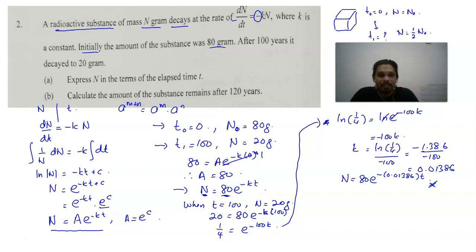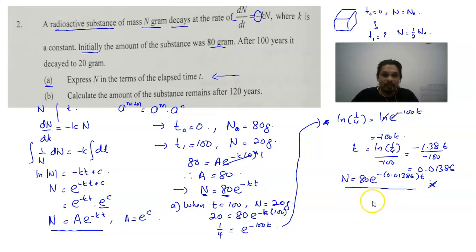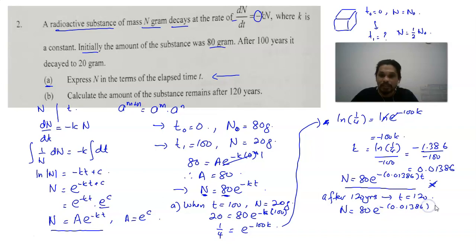We now complete the equation: N equals 80 e to the power of negative 0.01386t. To express N in terms of elapsed time t — that is the answer to part (a). To calculate the amount of substance remaining after 120 years, t equals 120: N equals 80 times e to the power of negative 0.01386 times 120. You may use any calculator app on your smartphone to compute this.